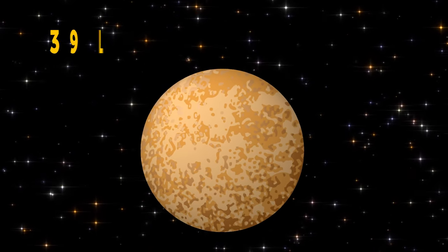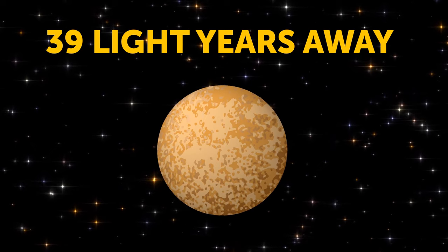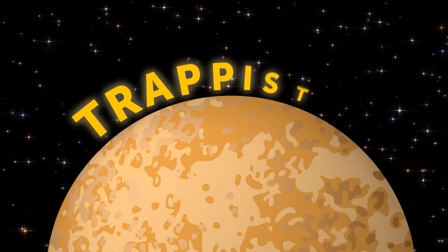Foot down! And we've arrived at a potentially habitable planet, 39 light-years away from Earth. This is TRAPPIST-1D.